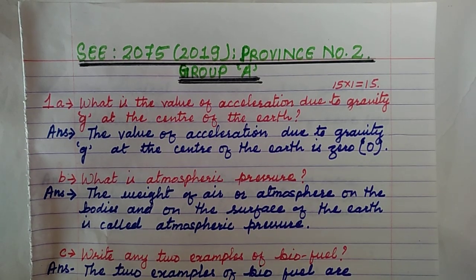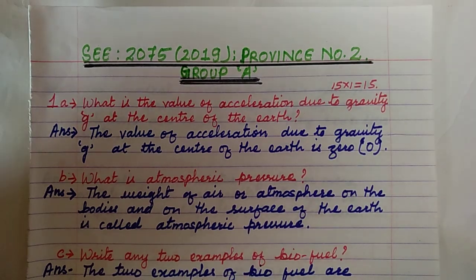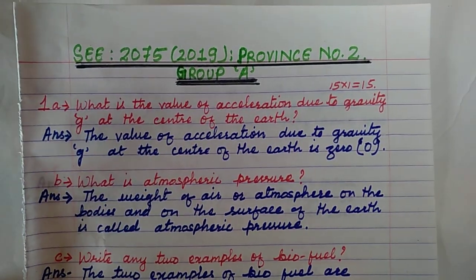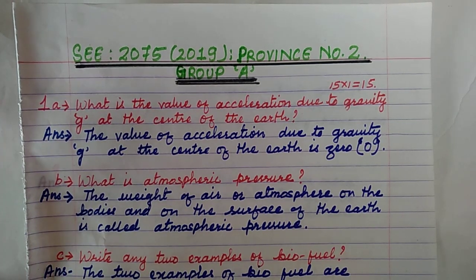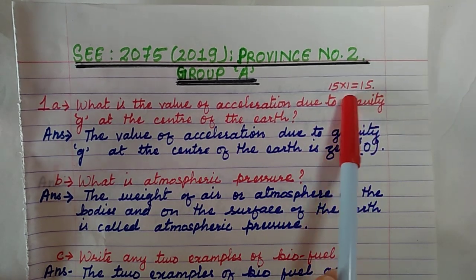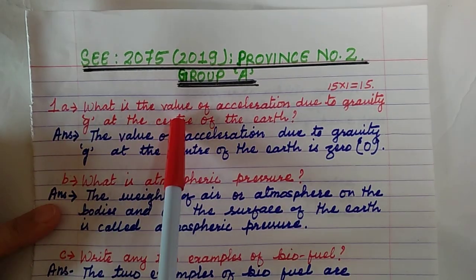This video series has been made to study science subject for the SEE examination, Grade 10. In this series we have been solving questions of previous board exams. We are going to discuss answers of the 2075 SEE examination, question paper of Province Number 2, Group A. There are 15 questions in total in Group A, one mark for each question, so total 15 marks.